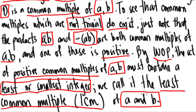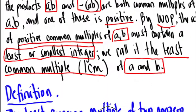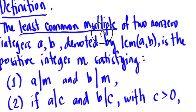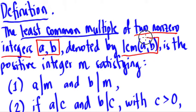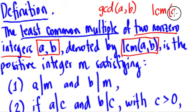So we call that the least common multiple or LCM of a and b. So for the record, here is the official definition of the least common multiple. The least common multiple of two non-zero integers a and b, denoted by the LCM of a and b.